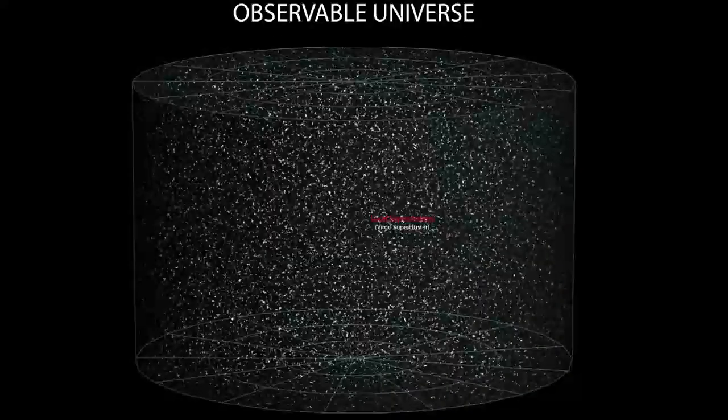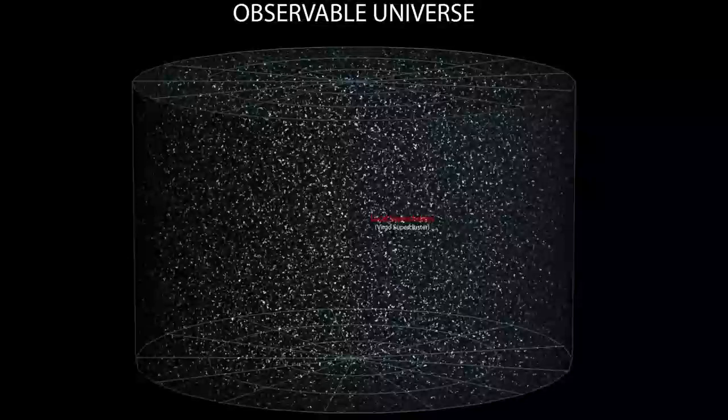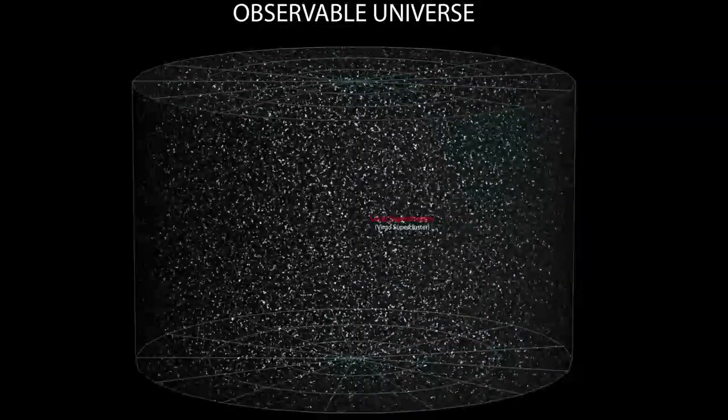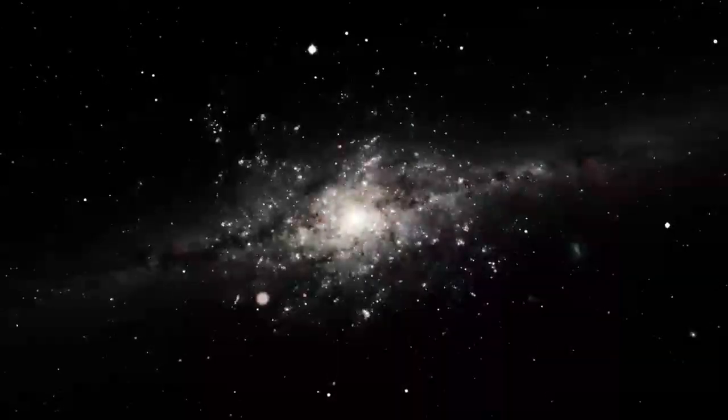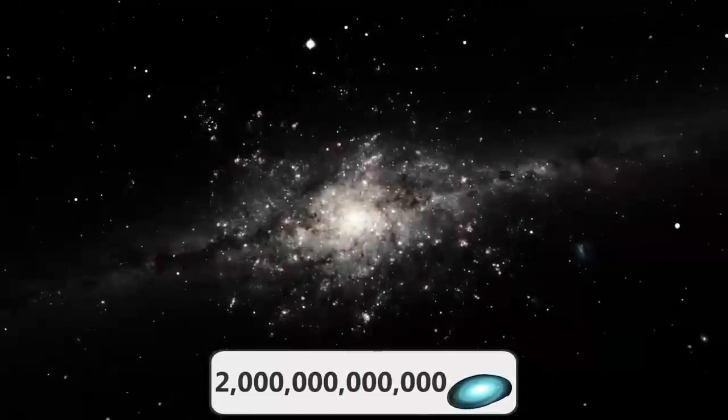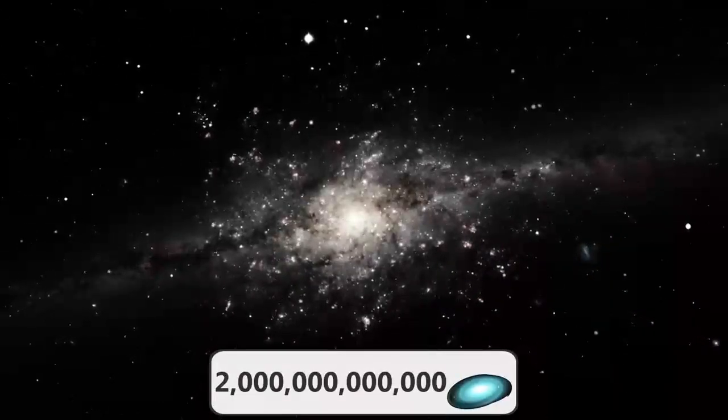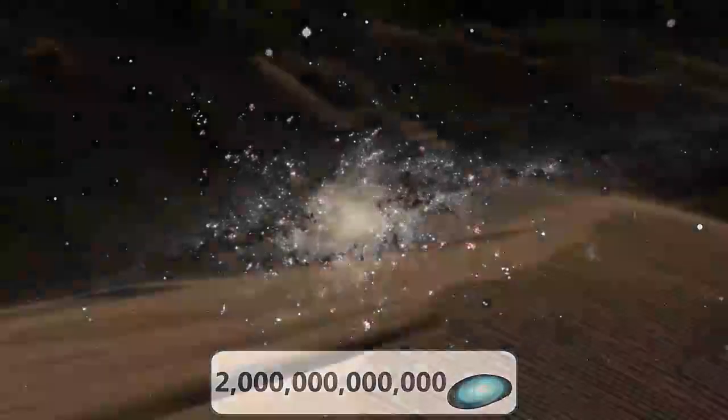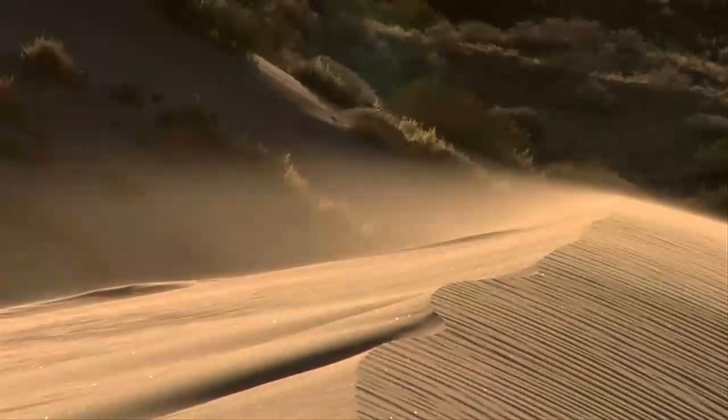but from even there we can zoom out all the way to the entire observable universe and see that even the Titanic Laniakea supercluster is just a tiny and insignificant part of everything. This is the observable universe and it contains everything that we know of. It is home to at least 2 trillion different and individual galaxies, which together contain more stars than there are grains of sand on the entire Earth.